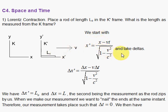We start with our Lorentz transformation. We have x prime is x minus vt, the Galilean transformation, divided by the square root of 1 minus v squared over c squared. And we take deltas.